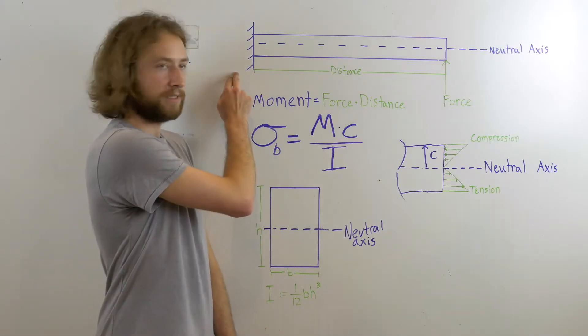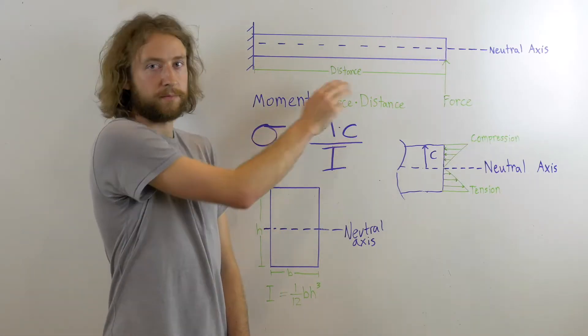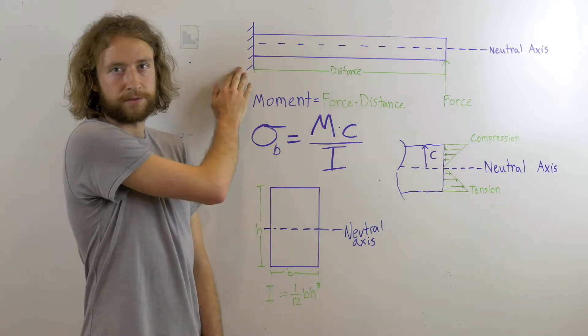Take for example this cantilevered beam which can be thought of as a wing connected to the fuselage.